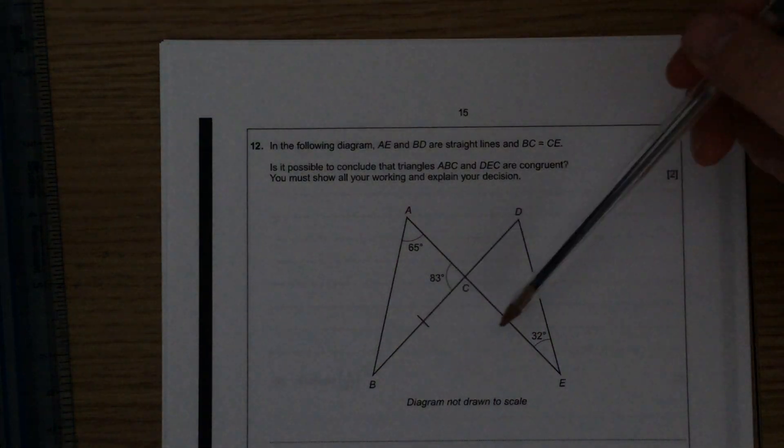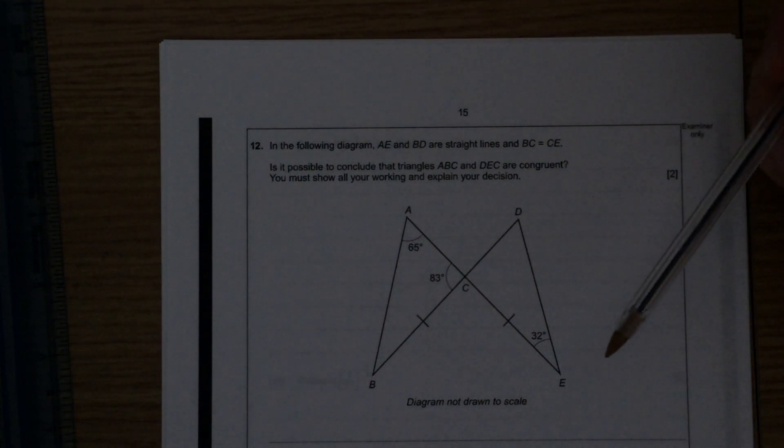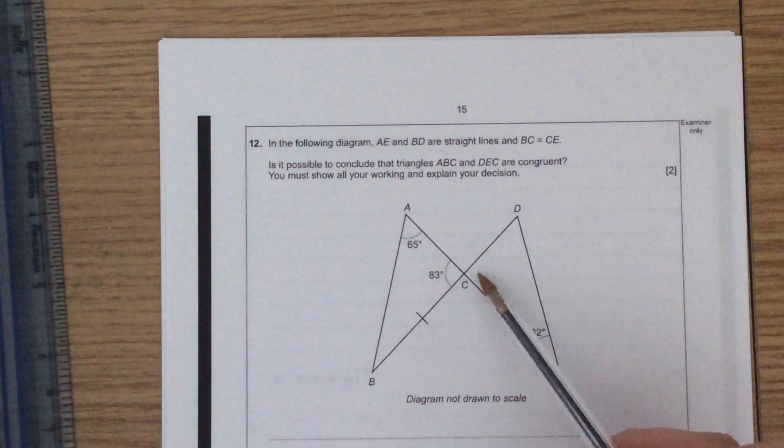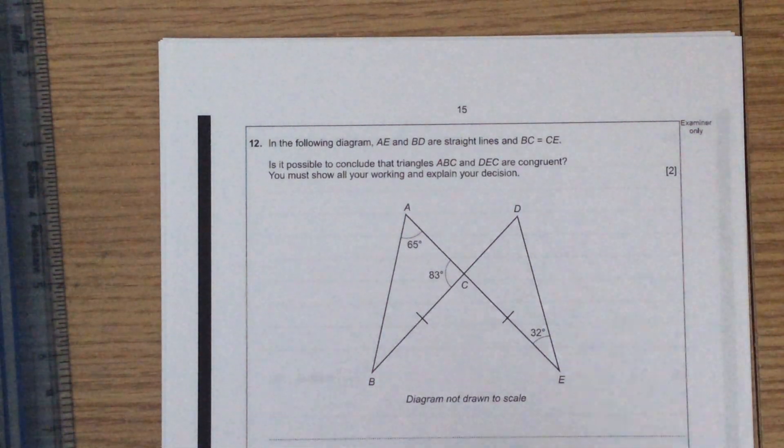So I know that these two sides are the same, so I've now got to prove that this angle and this angle are the same, and also that this angle and this angle are the same.